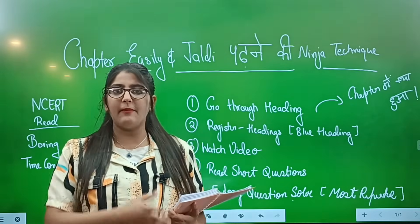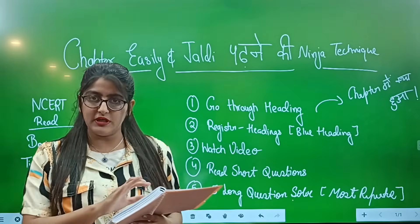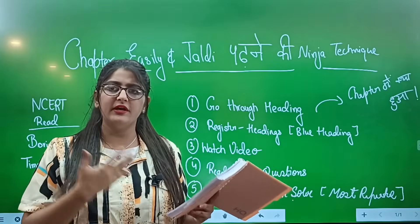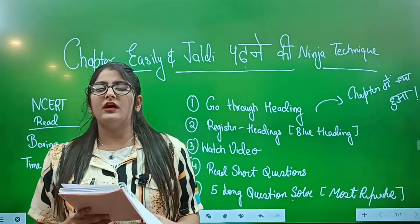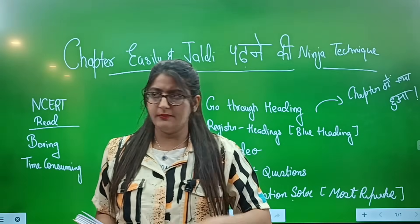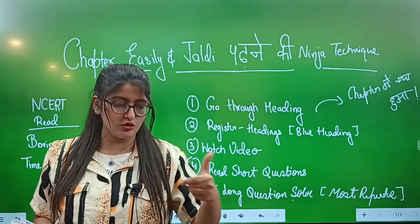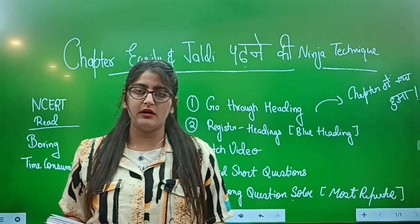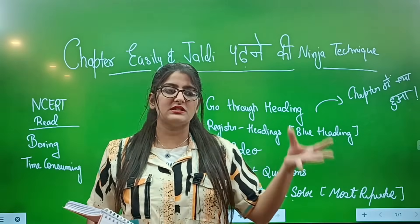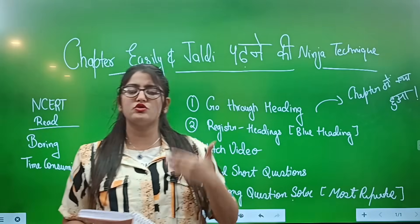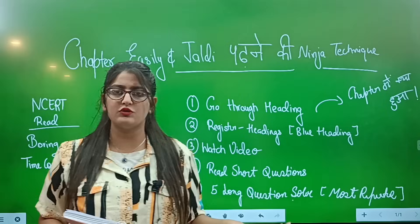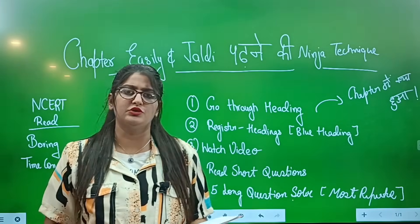First of all, open the old chapter NCERT and read all the headings. Read the chapter headings one by one. For example, in SST you might see headings like 'The Unification of Italy' and 'Britain'. In a science chapter, you will see concepts listed. In economics, you will see stages like the independence stage and its effects. In English, you read the summary and notes — go through all the headings.